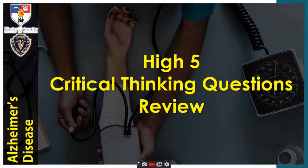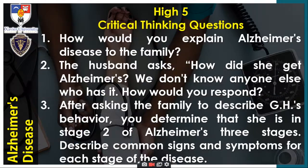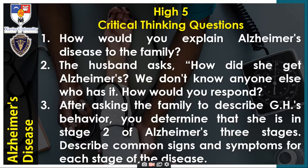Let's now have the high five critical thinking questions. Number one: How would you explain Alzheimer's disease to the family? Number two: The husband asked, 'How did she get Alzheimer's? We don't know anyone else who has it.' How would you respond?